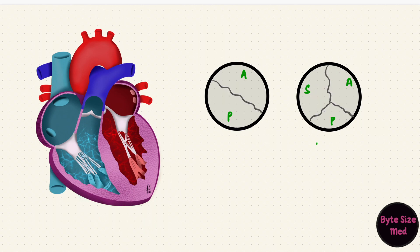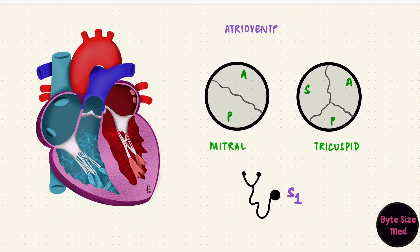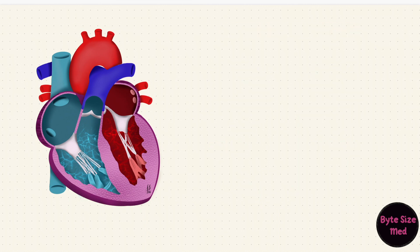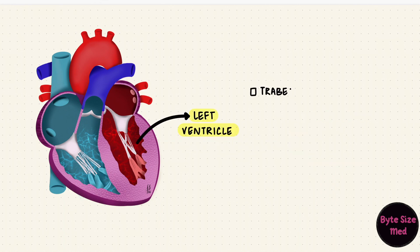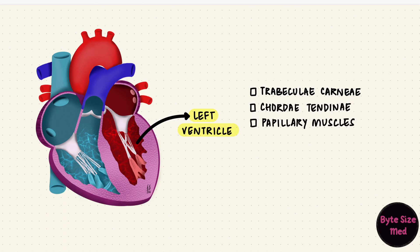The closure of these two atrioventricular valves sends vibrations through the chambers, creating an audible sound called the first heart sound. So S1 is because of closure of the atrioventricular valves. The left and right ventricle are separated by an interventricular septum, which has two parts: an upper membranous part and a lower muscular part. The left ventricle, like the right ventricle, has trabeculae carneae, chordae tendineae, and papillary muscles. But here there are two large papillary muscles: anterior and posterior.